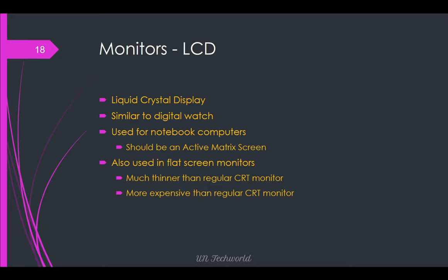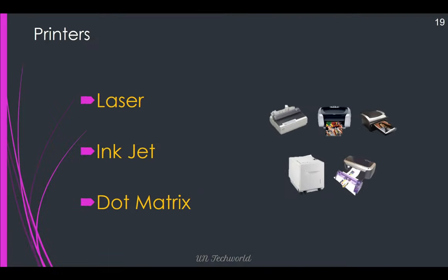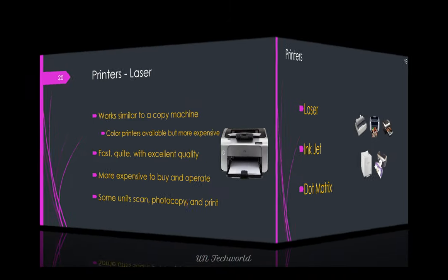CRT stands for cathode ray tube. LCD monitors are more expensive than regular CRT monitors. Printers are easily divided into two types: impact printers and non-impact printers. They are further divided into three types: laser, inkjet, and dot matrix printers. Dot matrix printers are low-cost, while inkjet and laser printers are more expensive.